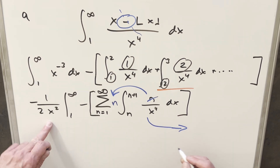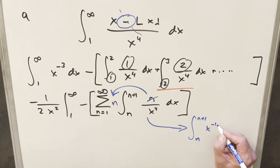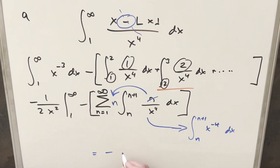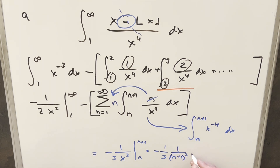The integral from n to n plus one of x to the minus four dx becomes minus one over three x cubed, evaluated from n to n plus one. When we plug in n plus one, we get minus one third over (n plus one) cubed. Then for the second part, minus times minus gives a plus one third, plugging in n, giving us one over three n cubed.